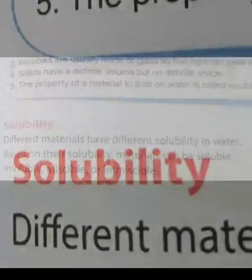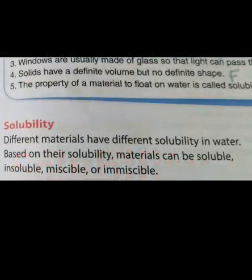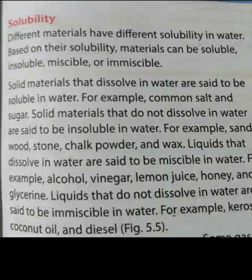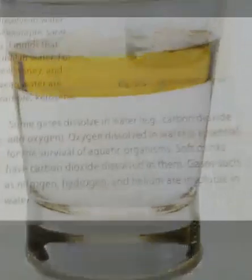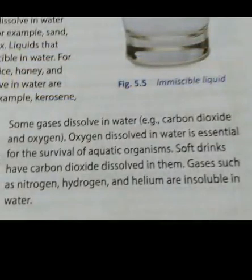Matter can be soluble or insoluble, or miscible or immiscible — this property is called solubility when materials can dissolve in water. Common salt and sugar can dissolve in water and are called soluble. Sand, wood, and chalk are insoluble in water. Liquids that dissolve in water are called miscible, like lemon juice, vinegar, alcohol, honey, and glycerin. Liquids that do not dissolve in water are called immiscible, like oil, diesel, and kerosene. Gases also dissolve in water; oxygen dissolves in water, which is essential for aquatic organisms. Soft drinks have dissolved carbon dioxide in them, while gases like nitrogen, helium, and hydrogen are insoluble in water.